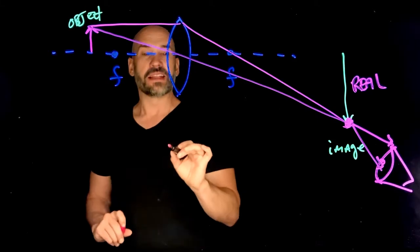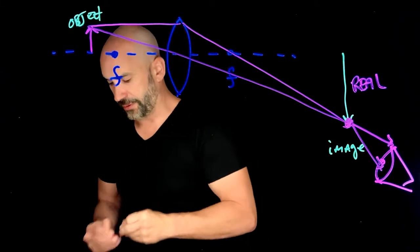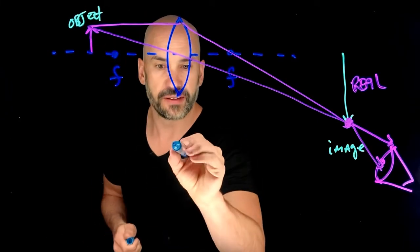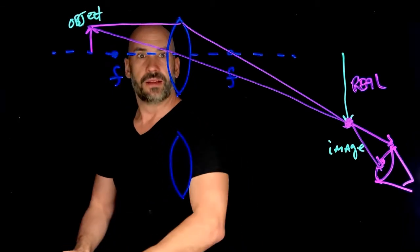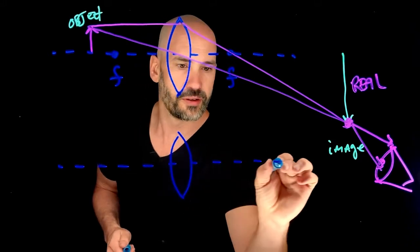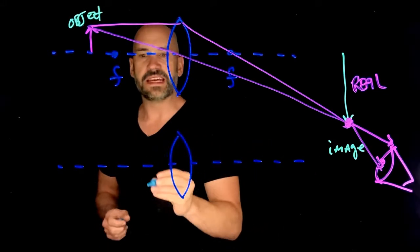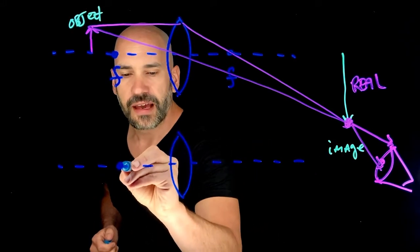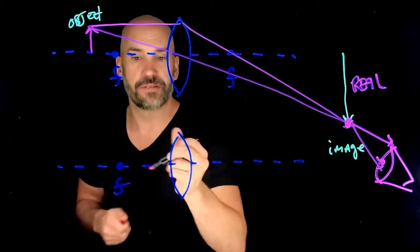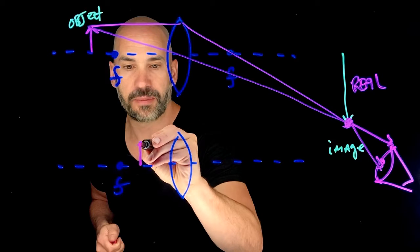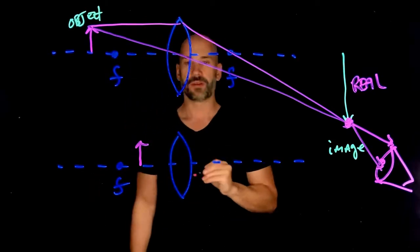Now, let's take a similar example, again, a converging lens like this. Let's put our little center line. And then instead of having the object outside the focal length, I'm going to have the object inside the focal length this time. So the object is going to be here.